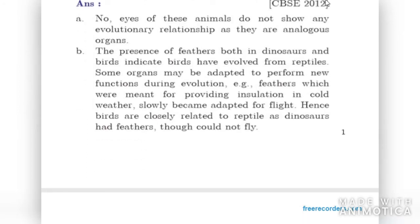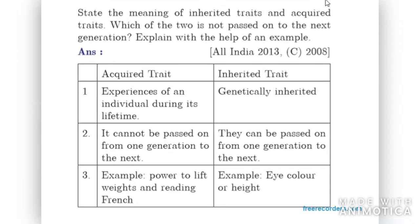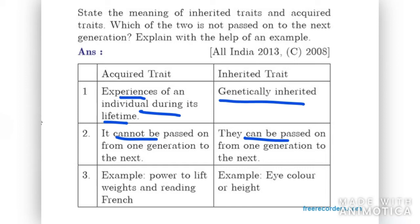Next question: State the meaning of inherited traits and acquired traits, and which of the two is not passed on to the next generation. Acquired traits are experiences of an individual during its lifetime — things we adapt from social life. Inherited traits are genetically inherited from parents. Acquired traits cannot be passed to the next generation; examples include the power to lift weights or reading French. Inherited traits like eye color, height, or face size can be passed on.